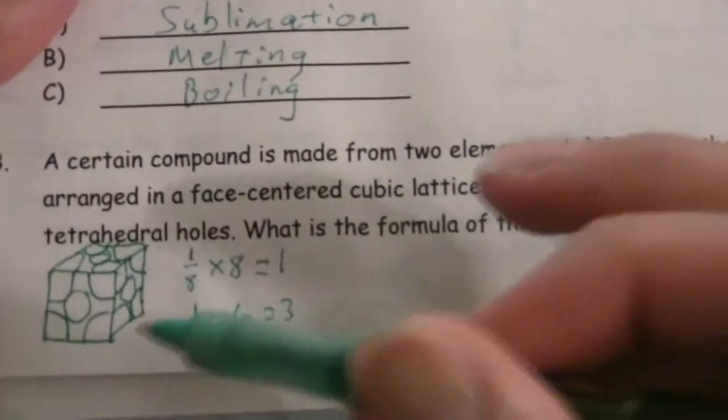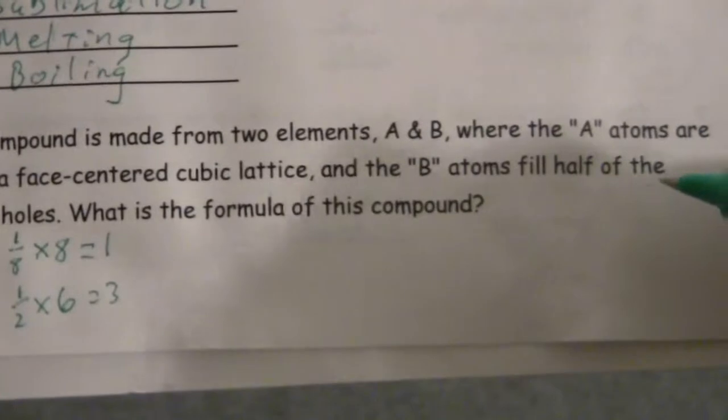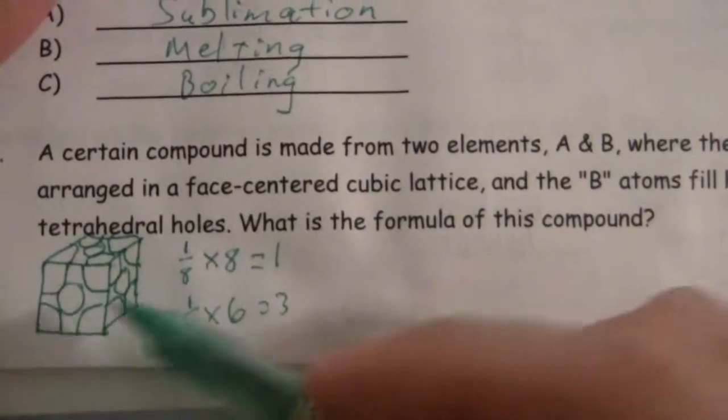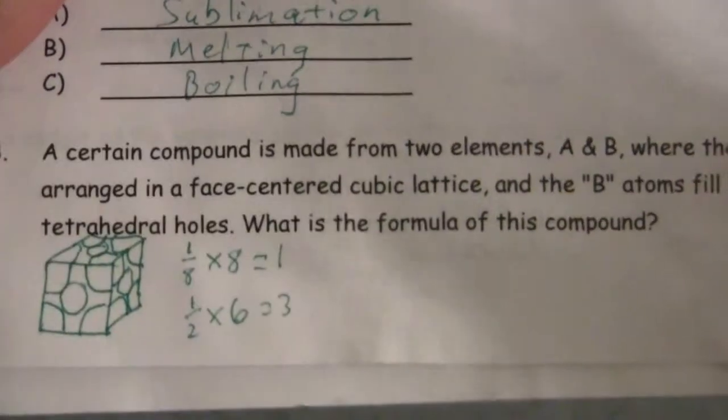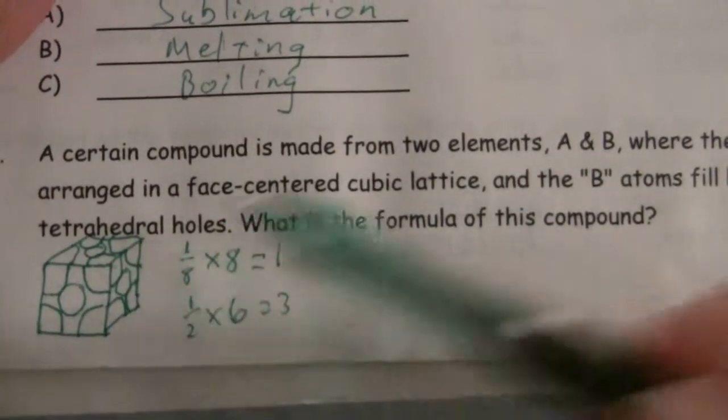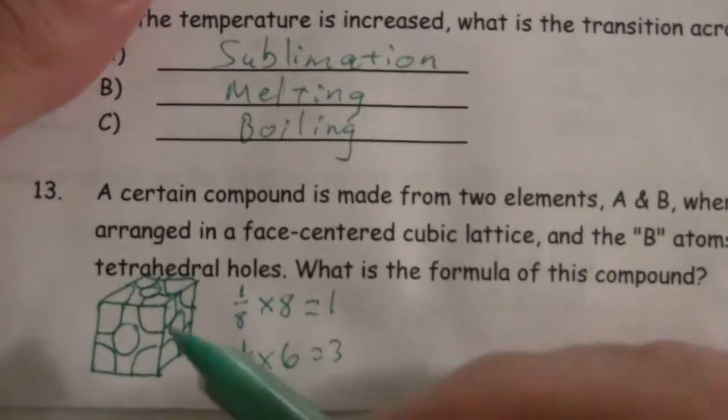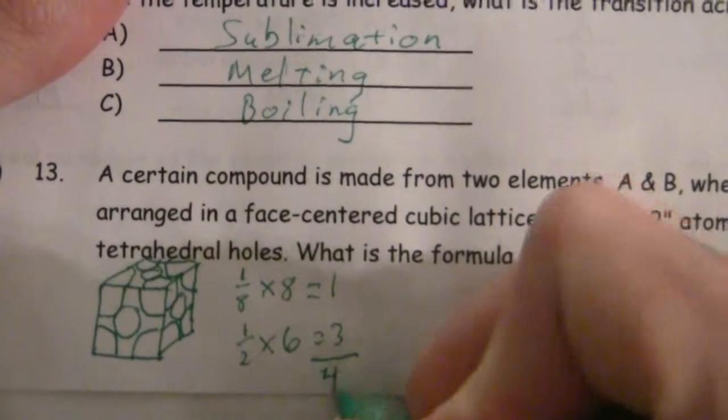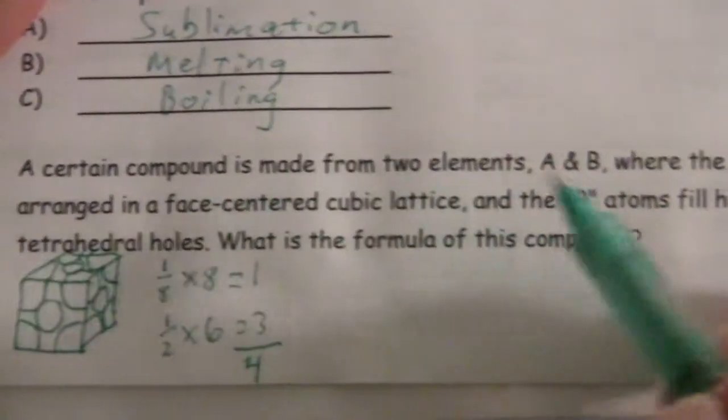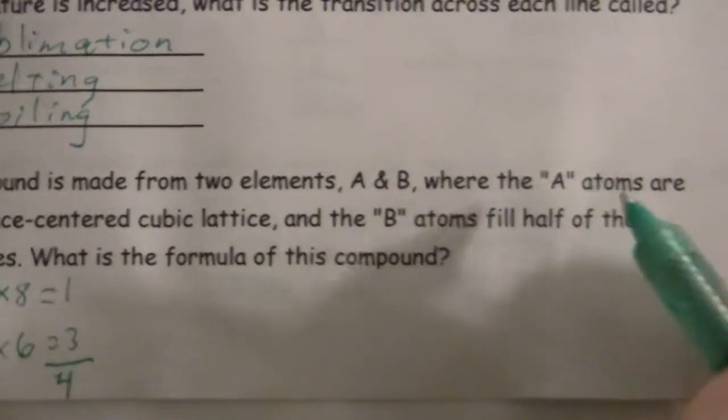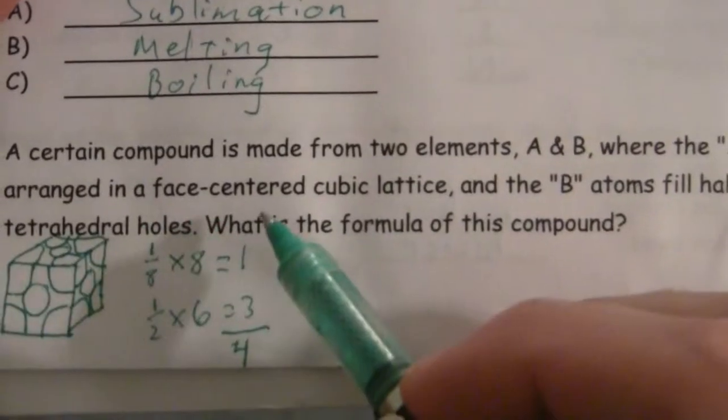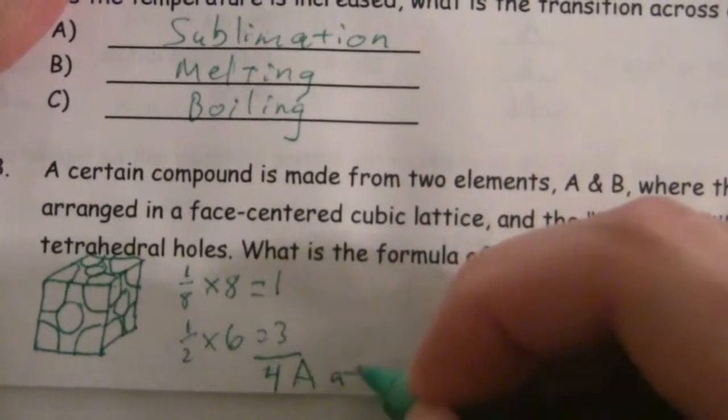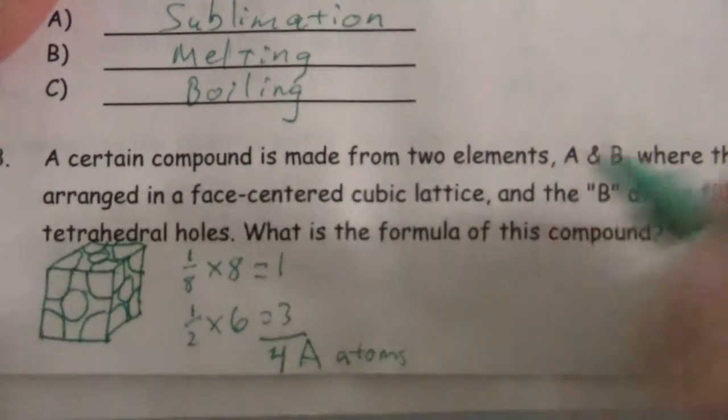So, the reason I'm doing this is we want to find the formula, and we know that the formula within the unit cell is the formula of the compound, once we reduce that down. So, we have a total of four atoms, and it was the A atoms that are face-centered cubic. So, there are four A atoms inside the unit cell.